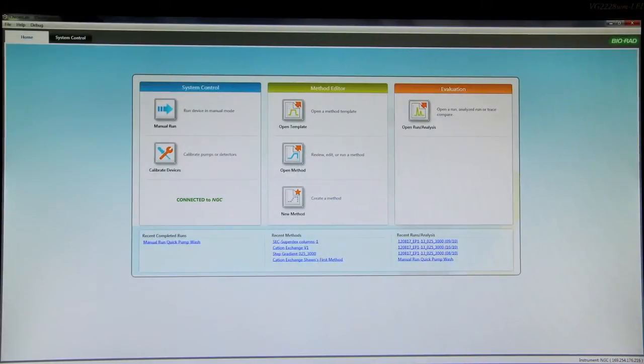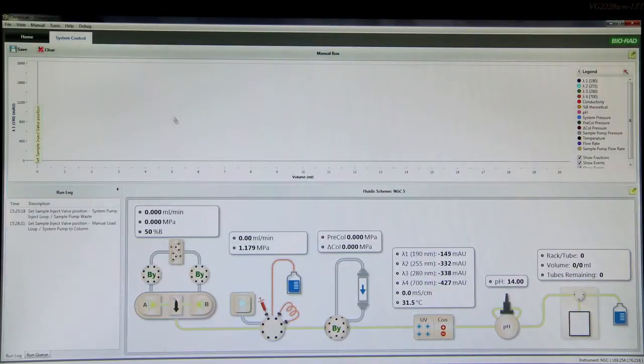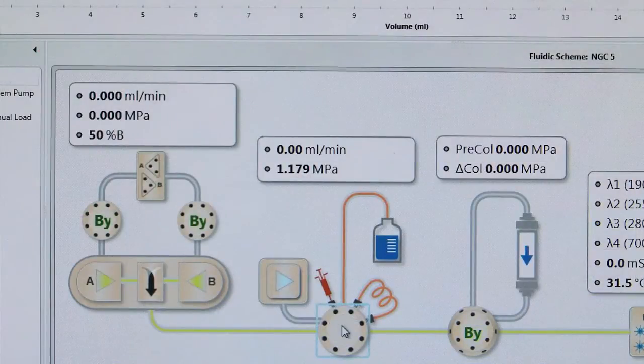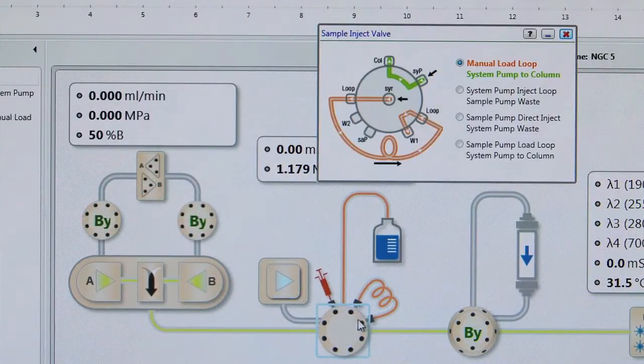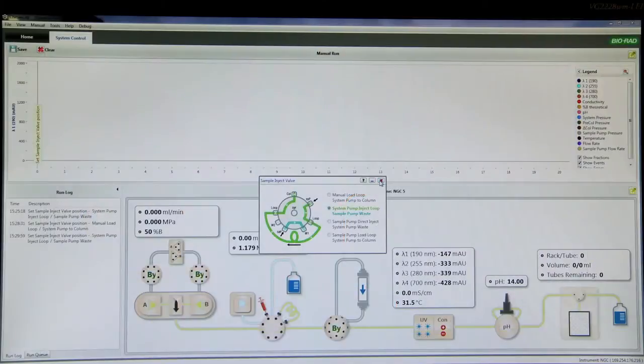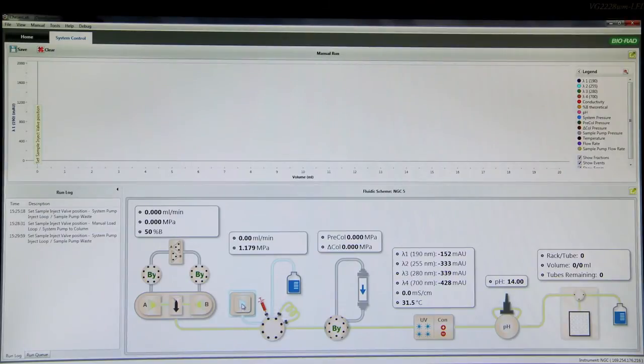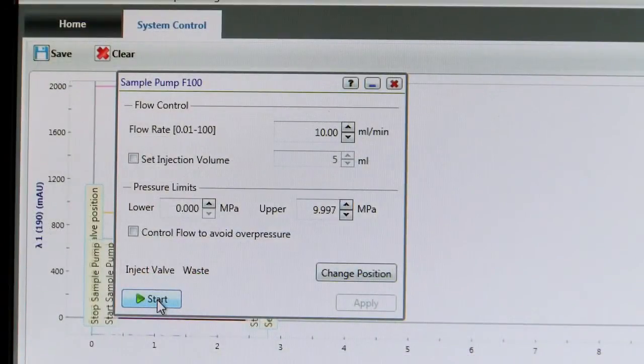You can also use ChromeLab to purge the sample pump. Select Manual Run in the home screen. Double-click the Inject Valve icon and select System Pump Inject Loop. Double-click the Sample Pump icon and set the flow rate to 10 milliliters per minute. Click Start to start the purge.